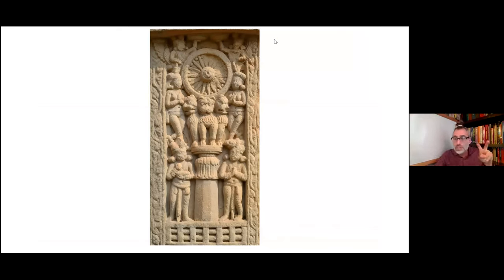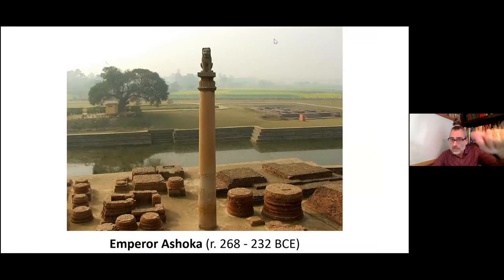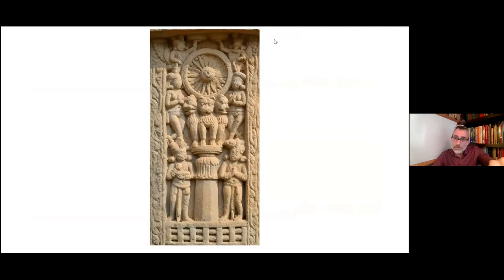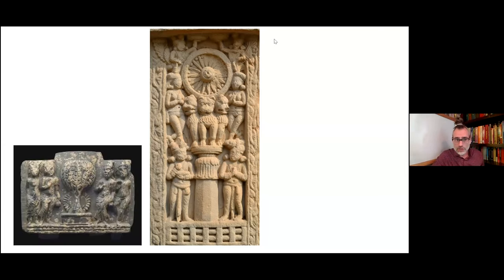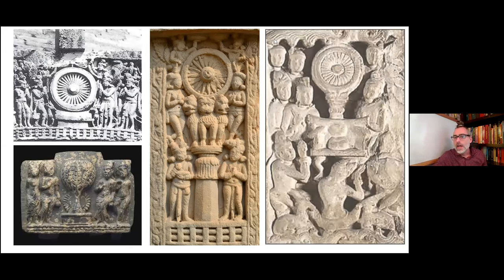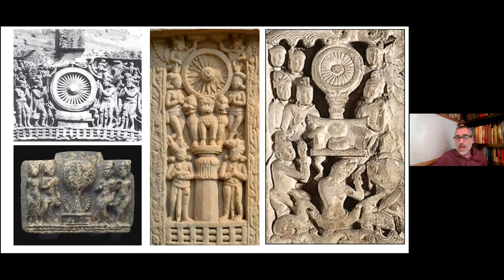Looking ahead, these pillars give rise to some of our first Buddhist images in India. Notice the lion on top of the pillar — we also see a carving with lions, a thousand-spoked wheel, a tree with a wheel at its base, and then a wheel with a throne but nobody sitting in it. These are some of the earliest Buddhist images, and the common thread is reverence for the wheel and the tree.